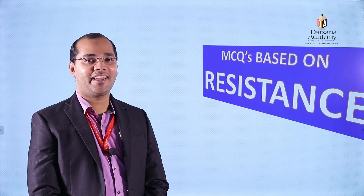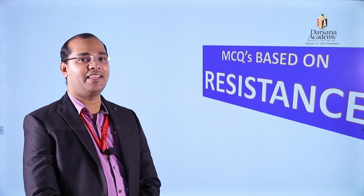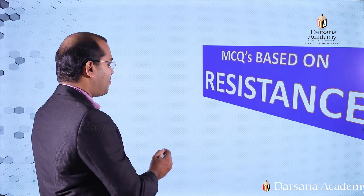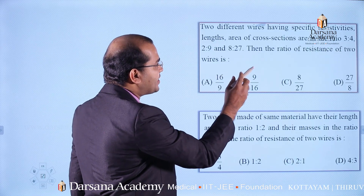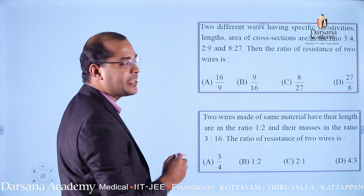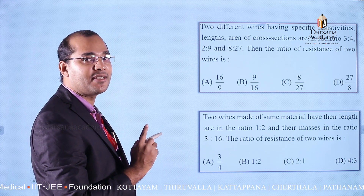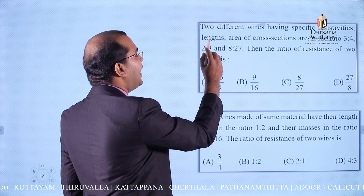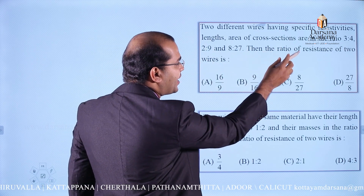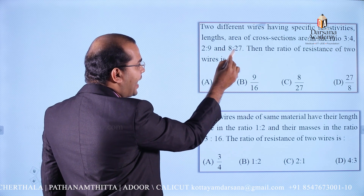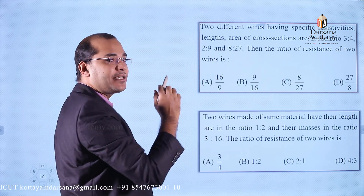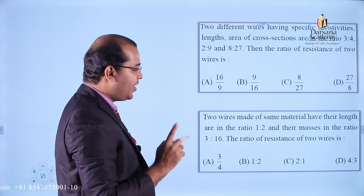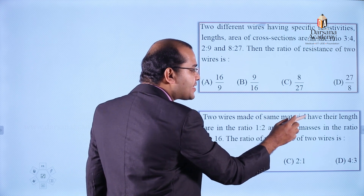Dear students, today I want to discuss MCQs based on resistance. The first question: two different wires having specific resistivity, length, and area of cross section are in the ratio 3:4, 2:9, and 8:27 respectively. Then the ratio of resistance of the two wires is what?